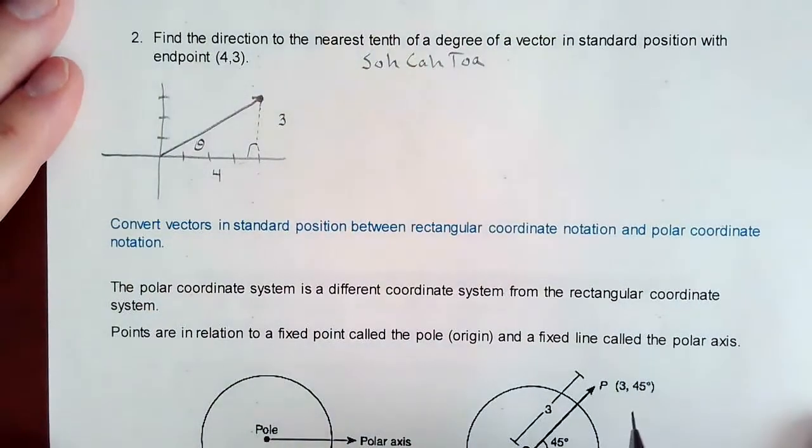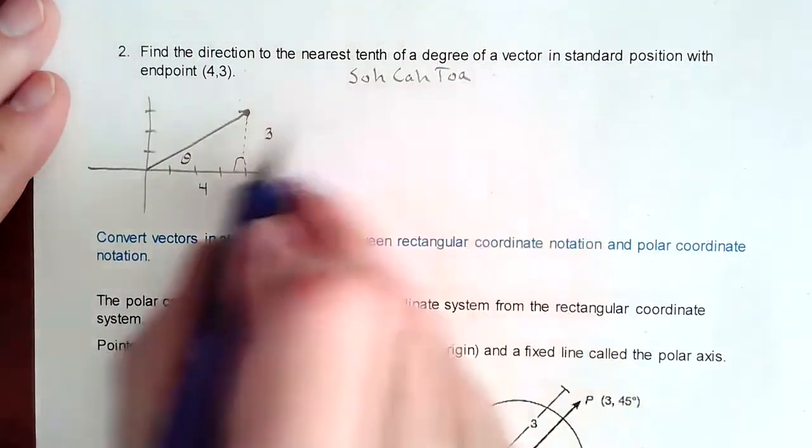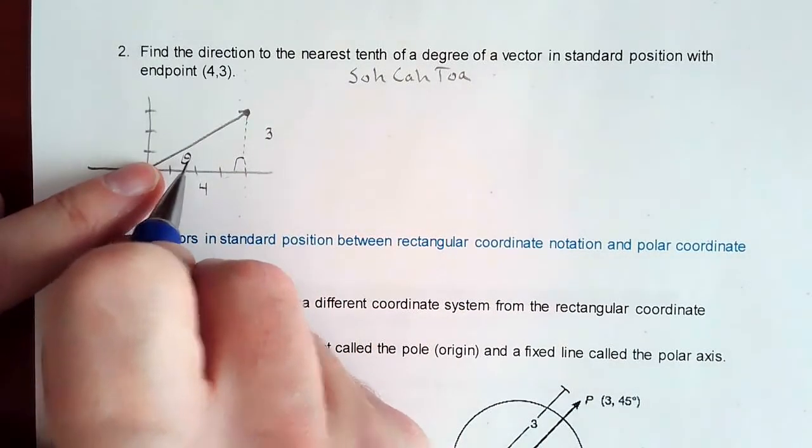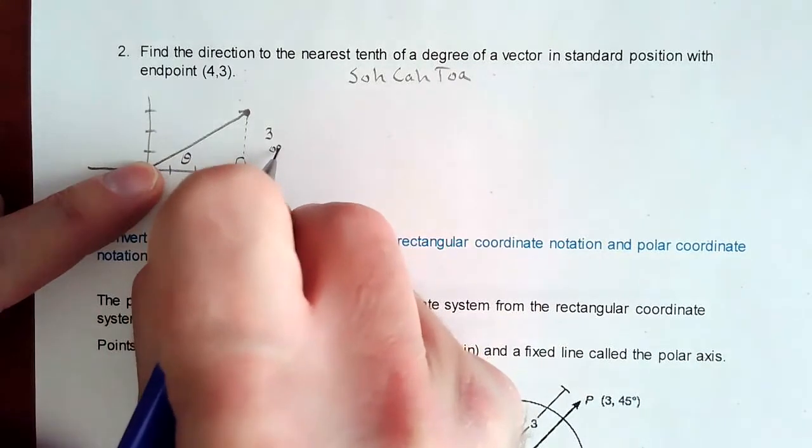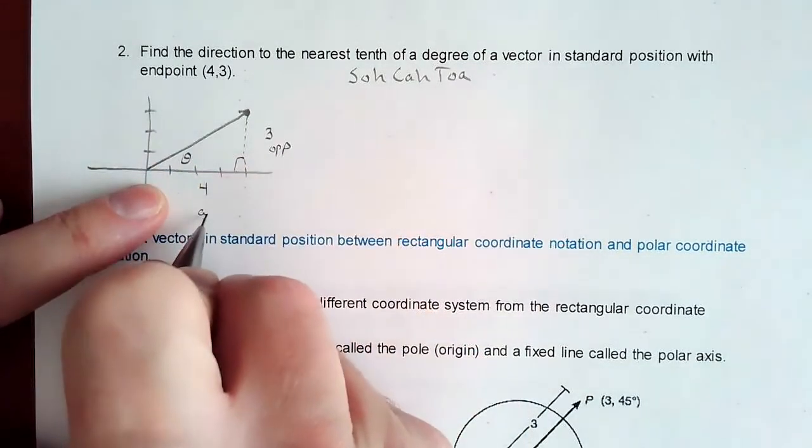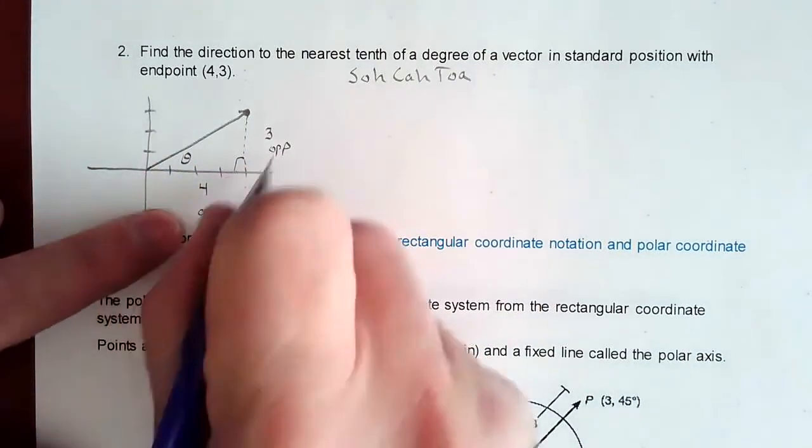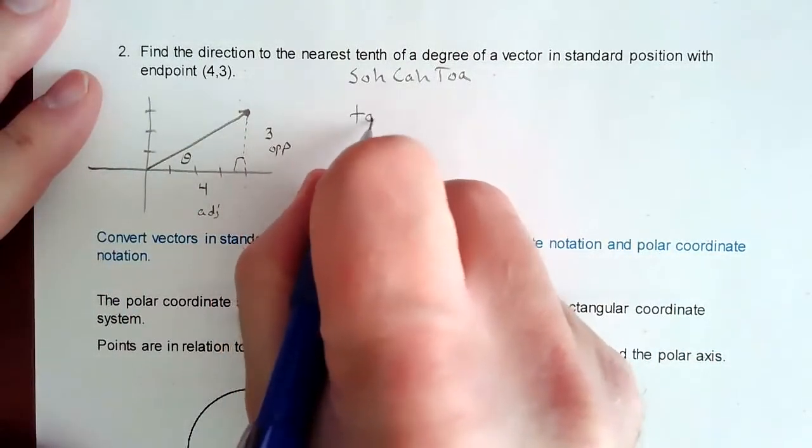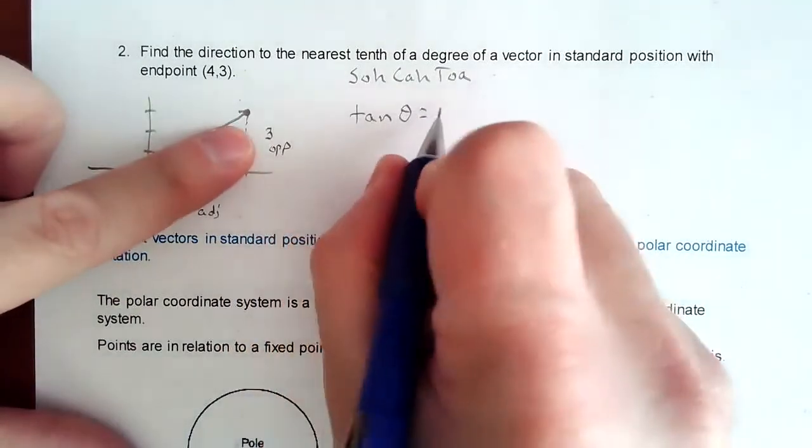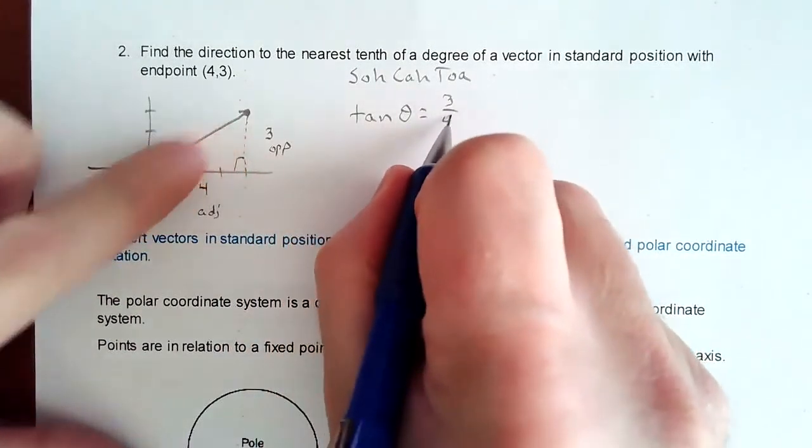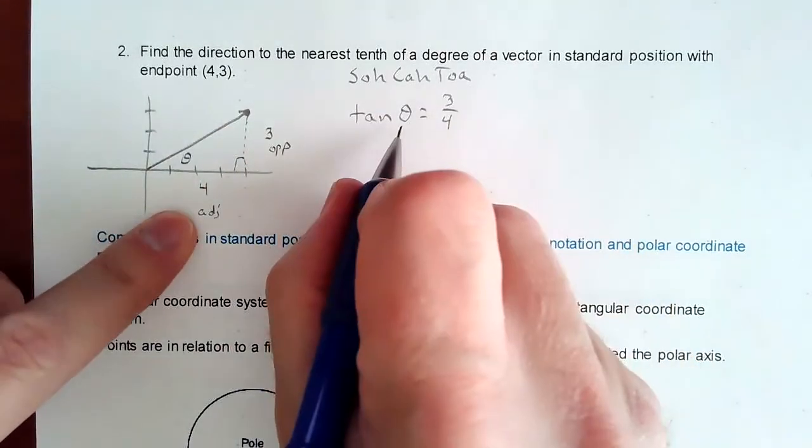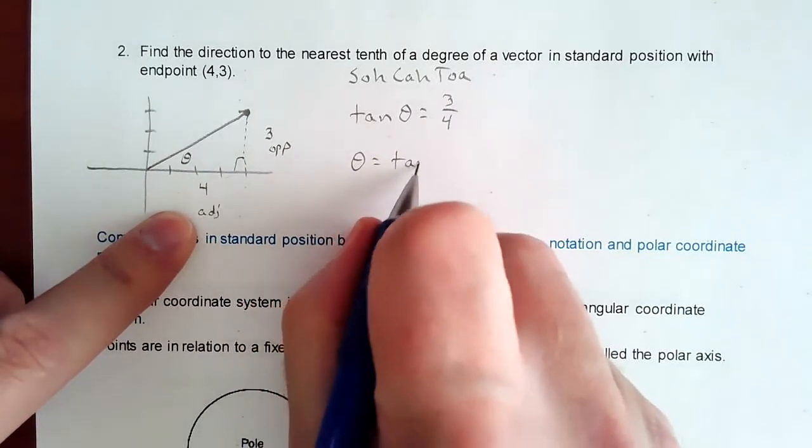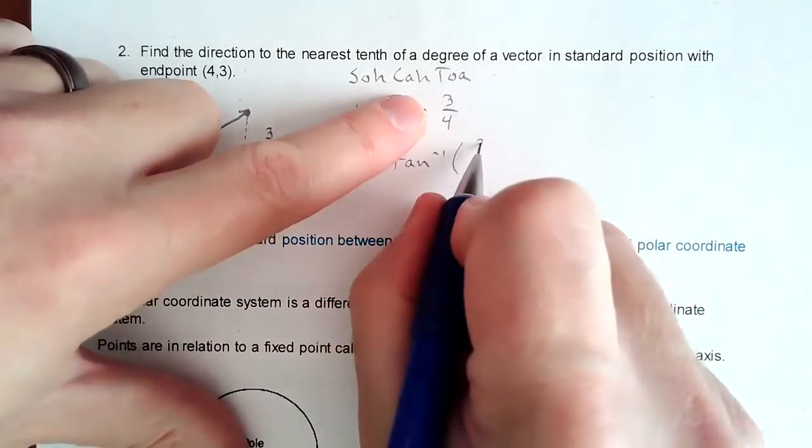So I'll throw out my SOHCAHTOA. And I just need to figure out which trig function we're using. Are we using sine, cosine, or tangent? It's all dependent upon the situation. So if here's our angle, this is the opposite side. This is the adjacent side. And so the trig function that has opposite and adjacent is tangent. So we set up our equation as tangent of theta equals opposite over adjacent. And the only way we can ever find an angle measurement is we will do the inverse tangent of that fraction.